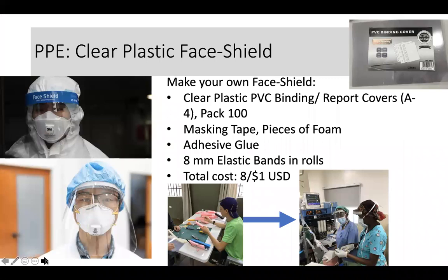Clear plastic face shields are very expensive and we may not have enough. A group in Kenya came together and started making face shields from PVC plastic binding — the kind used in report binding — with masking tape, foam, glue, and bands. They're able to make about eight shields for one US dollar. If face shields are a limitation, have these made. It doesn't take expensive equipment, and you can make thousands for just a small amount of money.